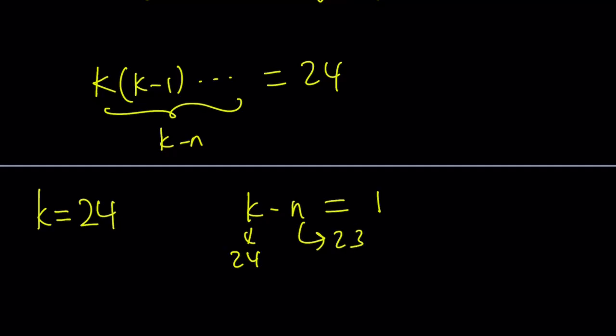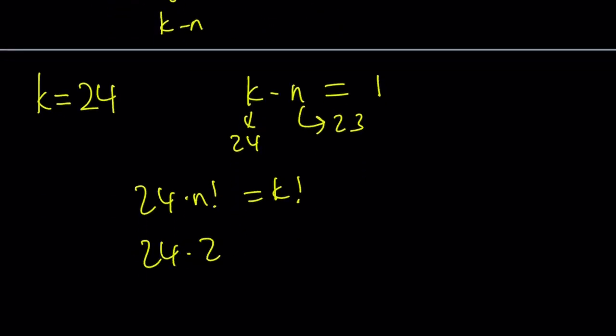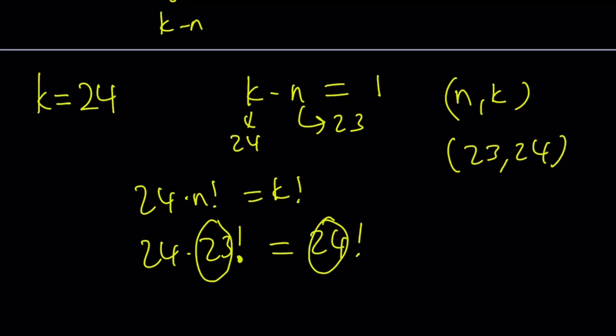Let's go ahead and take a look at how this works. 24 times n factorial is k factorial. If n is 23, then you get 24 times 23 factorial. And for the reasons we mentioned before, this is the same as 24 factorial. So n equals 23 and k equals 24 is a solution to this equation. If I want to write it as an n comma k ordered pair, I could just write 23 comma 24.